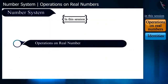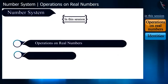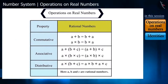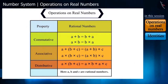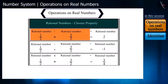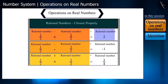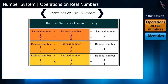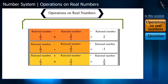Today we will discuss operations on real numbers and some identities. We have learned that rational numbers satisfy the commutative, associative, and distributive properties for addition and multiplication. If we add, subtract, or multiply any two or more rational numbers, the resultant number is also a rational number. Can we say the same for division?